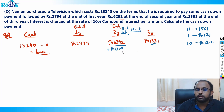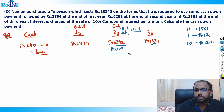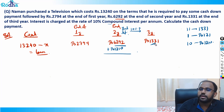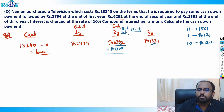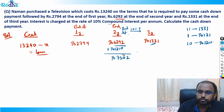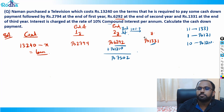That means if he had cleared the loan at the end of the second year only, he wouldn't need to pay that extra 10% on ₹1210, which is ₹121. The total loan at the end of year 2 would have been ₹7502 — that is 6292 plus 1210.